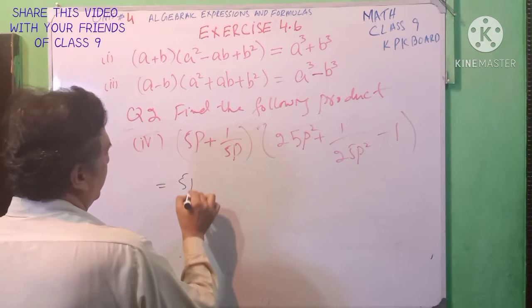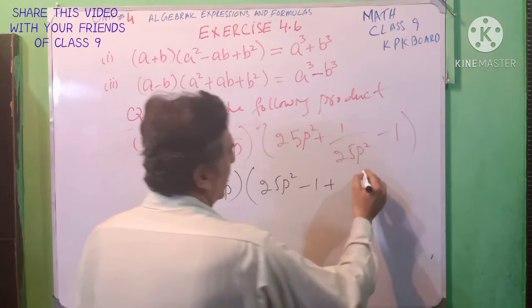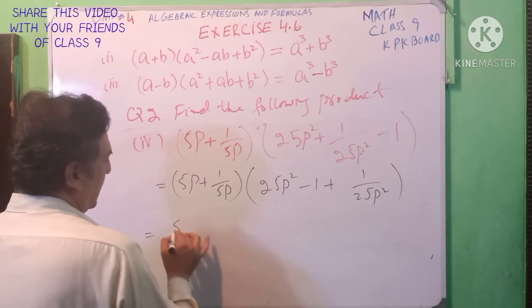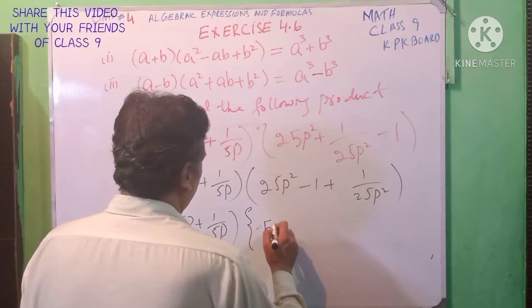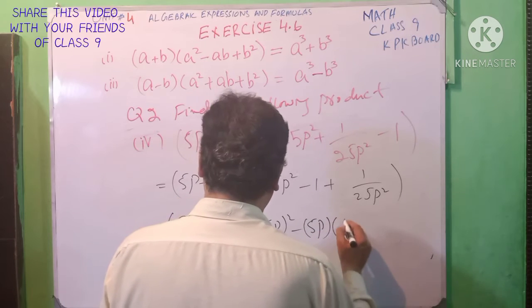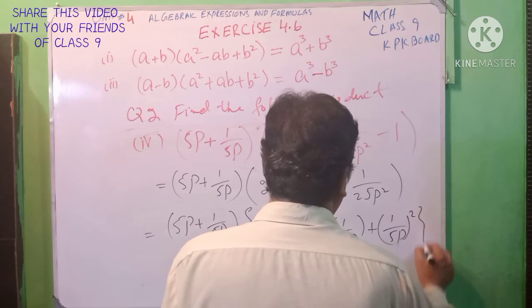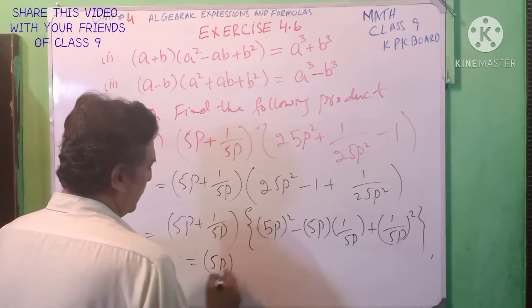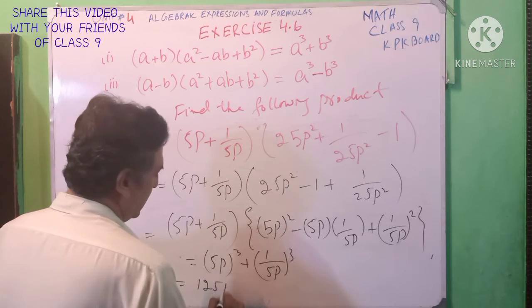Part 5: (5p + 1/(5p)) into (25p² - 1 + 1/(25p²)). a is 5p, b is 1/(5p). a square: (5p)² = 25p². Plus ab: 5p into 1/(5p). Plus b square: (1/(5p))². a plus b, a square minus ab plus b square gives a cube plus b cube: 125 — 5p cube. This is our answer.